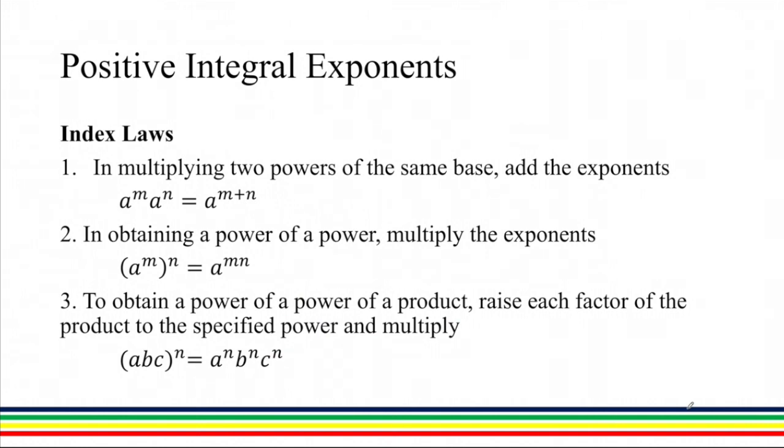Now we are going to discuss the index laws. First, in multiplying two powers of the same base, we can add the exponents. For example, a raised to m times a raised to n. And since they have a common base, which is a, we can just add their exponents. We have m plus n.